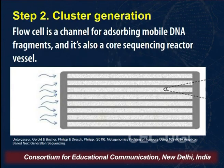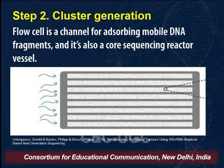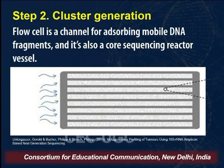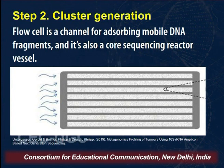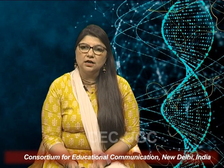Step 2 is cluster generation. What the Illumina sequencing requires is a flow cell — a channel for absorbing the mobile DNA fragments, used as the sequencing vessel. The adapter-containing fragments are loaded onto these flow cells. How the flow cell attaches these adapter-containing fragments and how the sequencing actually occurs will be discussed in our next session. Thank you.